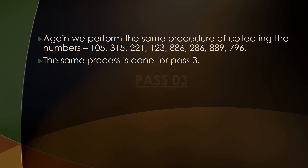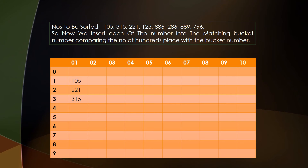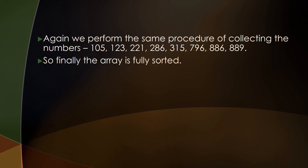We move to pass 3. We now consider the digit at the hundreds place — the most significant digit. 105 goes to bucket 1, 315 at bucket 3, 221 at bucket 2, 123 at bucket 1 second position, 886 at bucket 8, 889 at bucket 8 second position, 796 at bucket 7, and 286 at bucket 2. We collect the numbers in order, and as you can see, the array is now fully sorted in ascending order.